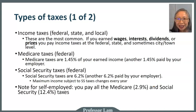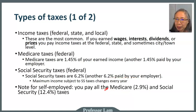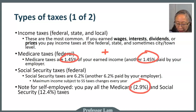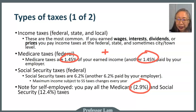If you're a self-employed entrepreneur, you need to pay special attention. To qualify for Medicare benefits, you have to pay the entire 2.9% Medicare tax — 1.45% as the individual and 1.45% as the employer — because you are your own employer. The same is true for Social Security: if you are self-employed and want to qualify for Social Security benefits, you have to pay the entire 12.4%.